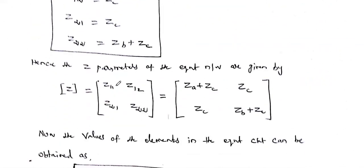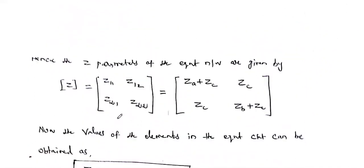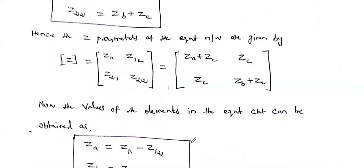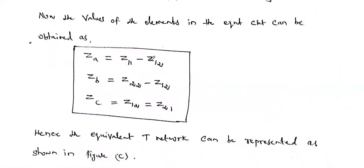We can write the Z-parameters in terms of T network elements: Z11 = ZA + ZC, Z12 = ZC, Z21 = ZC, Z22 = ZB + ZC. Rearranging, we get T network elements in terms of Z-parameters: ZC = Z12, so ZA = Z11 − Z12, ZB = Z22 − Z12, and ZC = Z12 = Z21. These are all the T network elements expressed in terms of Z-parameters.